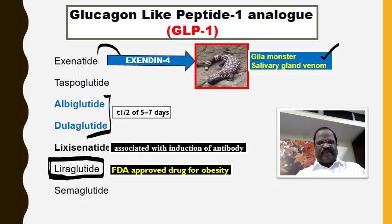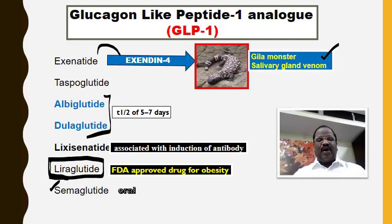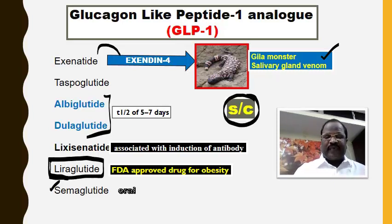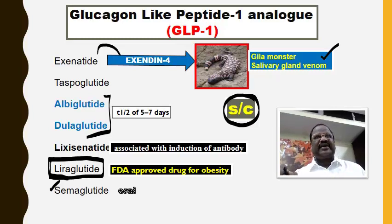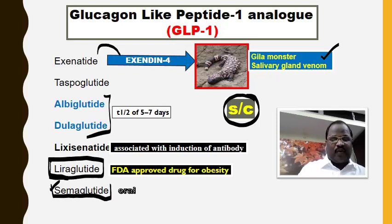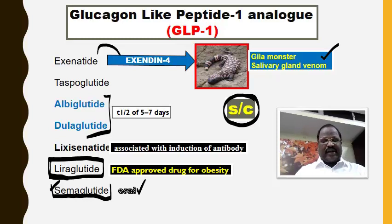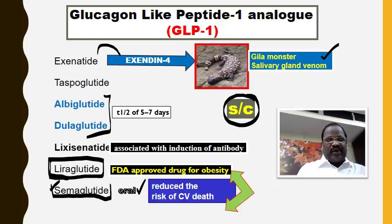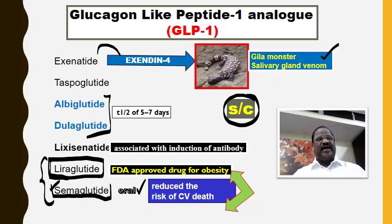One more very important latest point: semaglutide is the GLP-1 analog given orally. Remember, all the GLP-1 analogs are given by subcutaneous injection — only one exception: semaglutide is given orally. Also, among the GLP-1 analogs, liraglutide and semaglutide have the very good advantage of reducing cardiovascular risk.